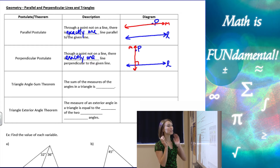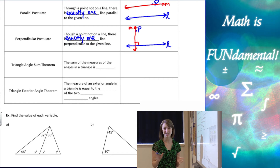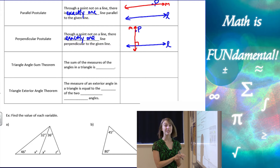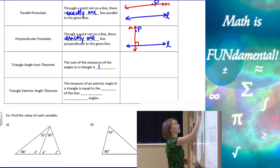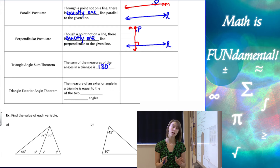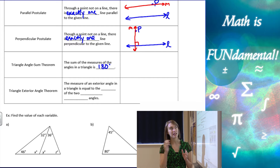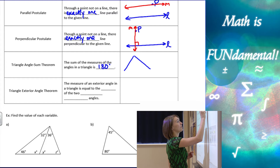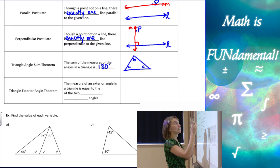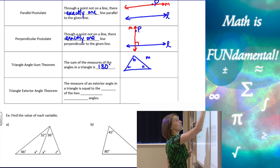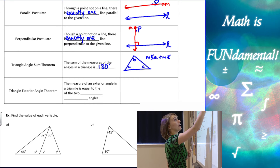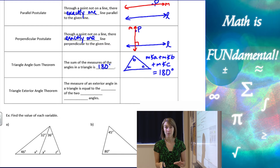Next we have the triangle angle sum theorem — sometimes called the triangle sum theorem, with the word 'angle' kind of hidden in there. This says that the sum of the measures of the angles in a triangle is 180 degrees, and it's always 180 degrees no matter what shape or size the triangle is. So for example, if I have angles A, B, and C inside a triangle, then the measure of angle A plus the measure of angle B plus the measure of angle C equals 180 degrees.